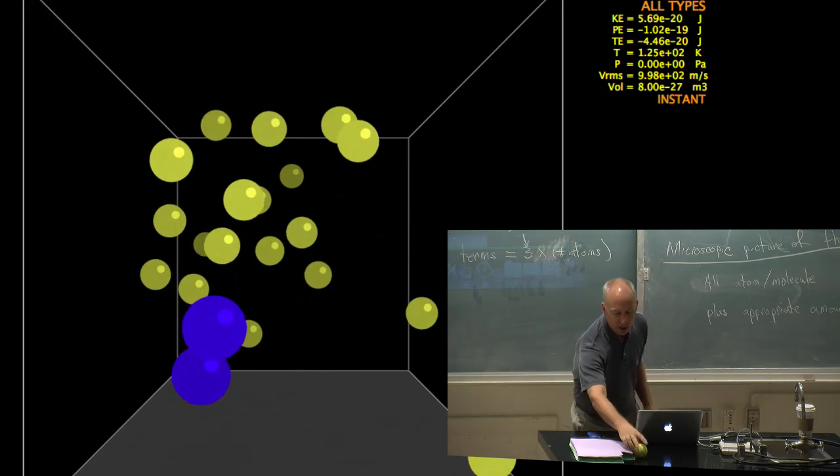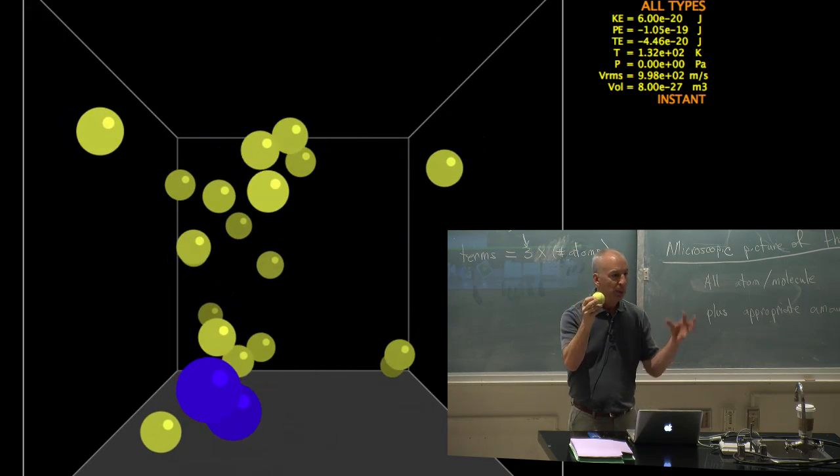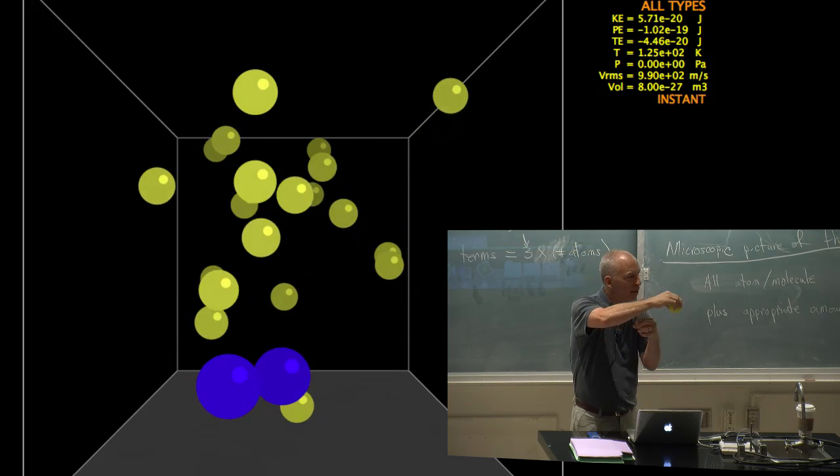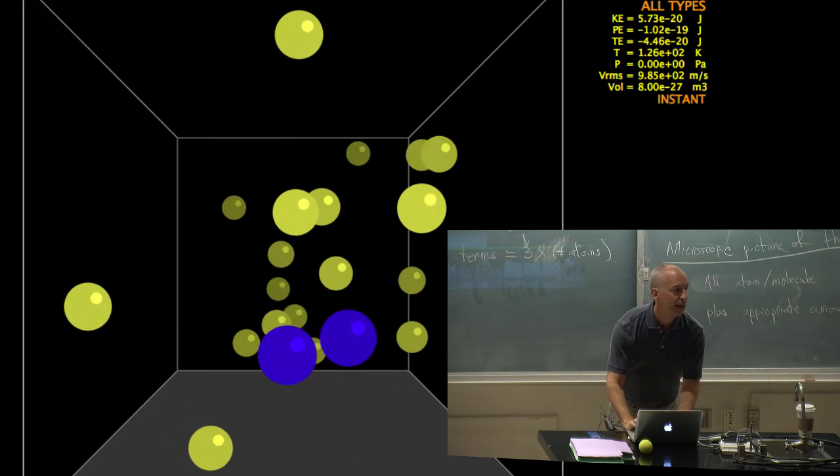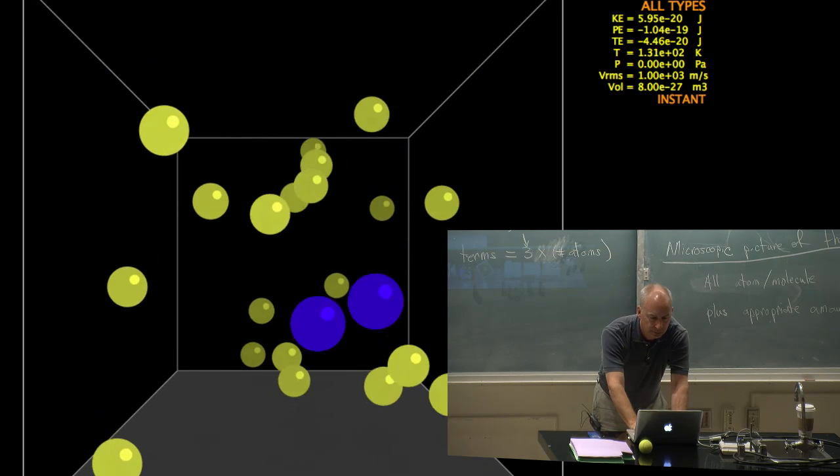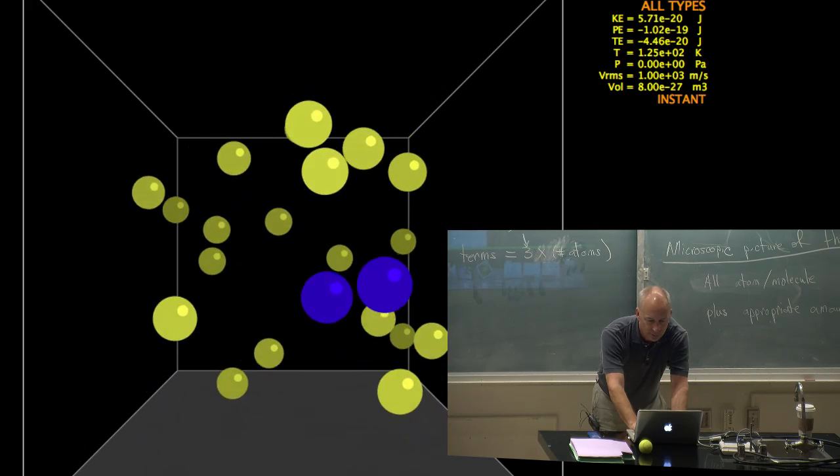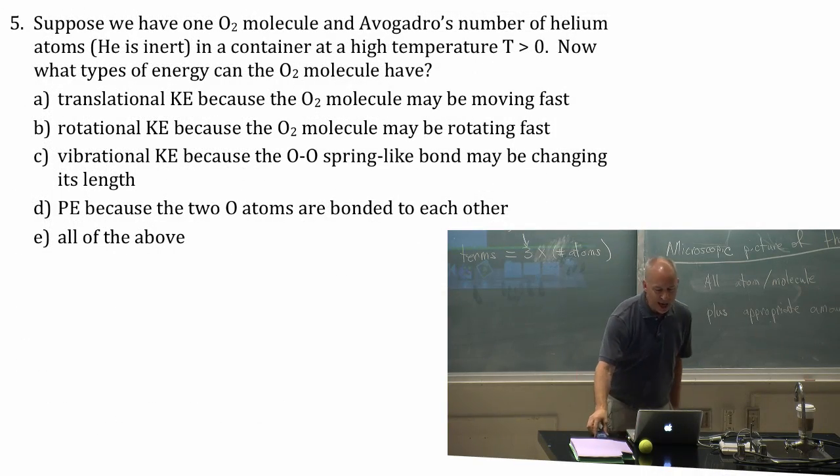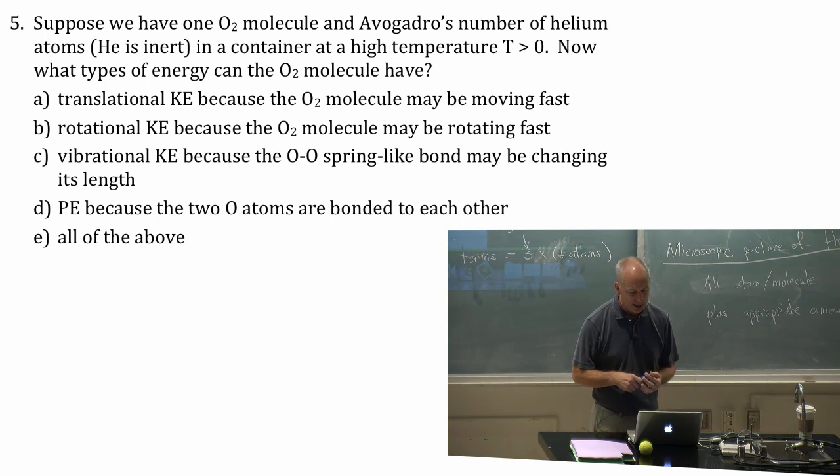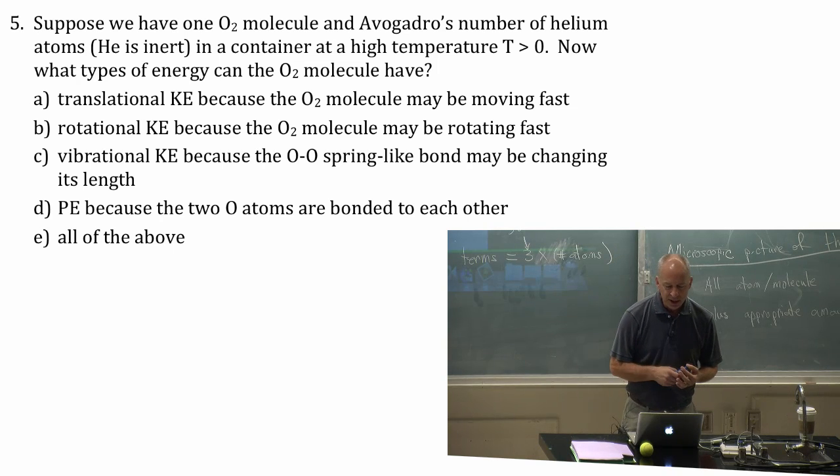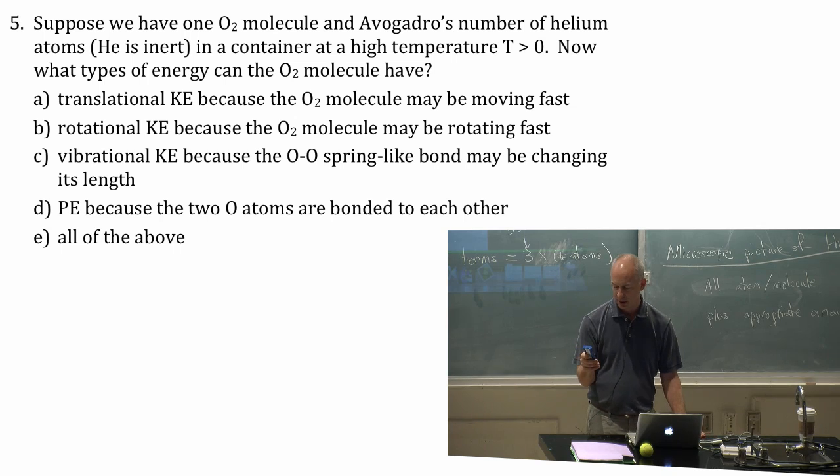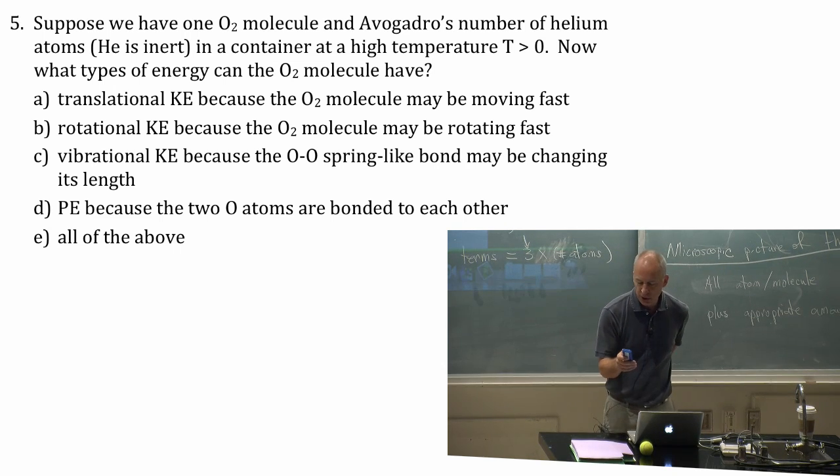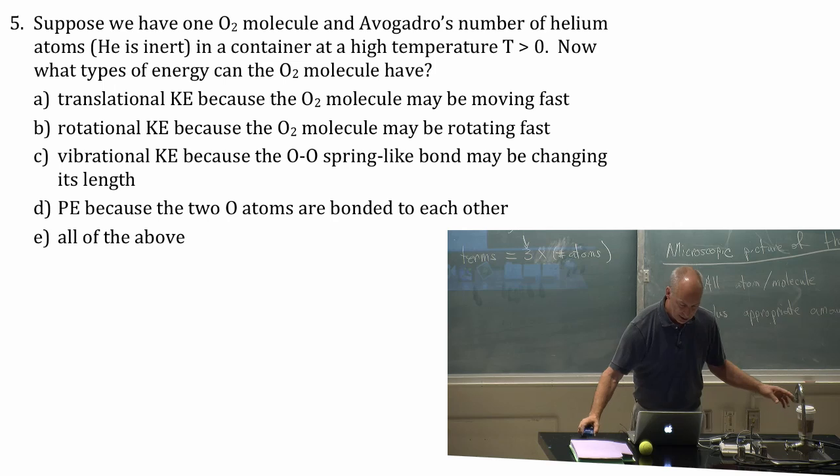But two atoms stuck together, absolutely they can rotate. The nuclei can move around each other and you can definitely see that. So my question for you. Suppose we have one O2 molecule and Avogadro's number of helium atoms in a container at a high temperature. What types of energy can the O2 molecule have? So that's the question. What types of energy can the O2 molecule have in this gas?